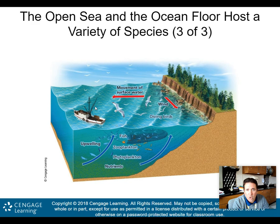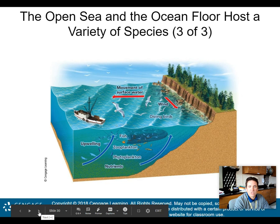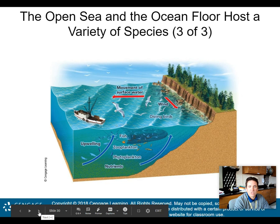Net primary productivity is low in the open sea, except in upwelling areas — because there aren't enough nutrients out there otherwise. Here's a picture showing the movement of surface water, with upwelling bringing nutrients up, fish toward the top, and zooplankton and phytoplankton visible — essentially the euphotic zone. That's where we'll end Part 1 of aquatic biodiversity, Chapter 6, and I'll see you in a bit for the second part of this lesson.